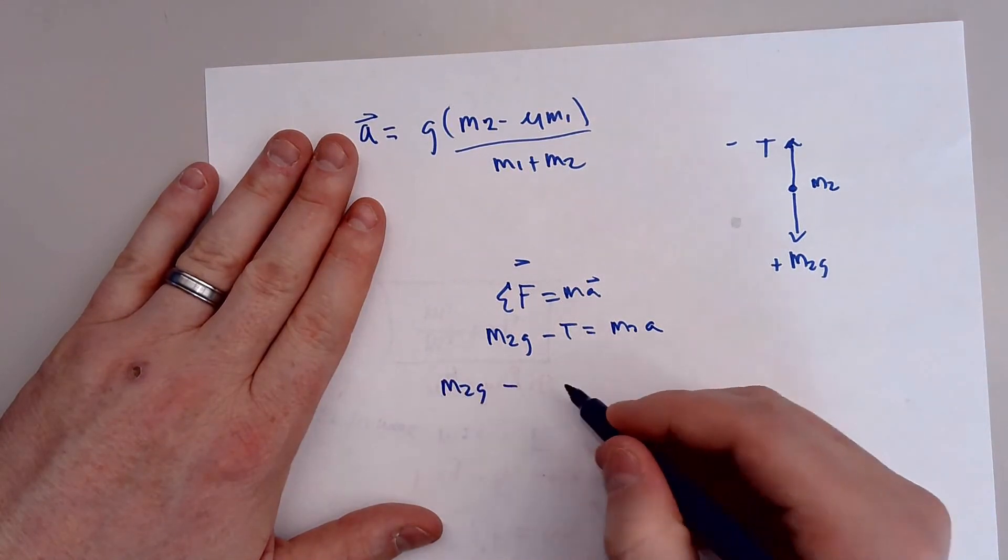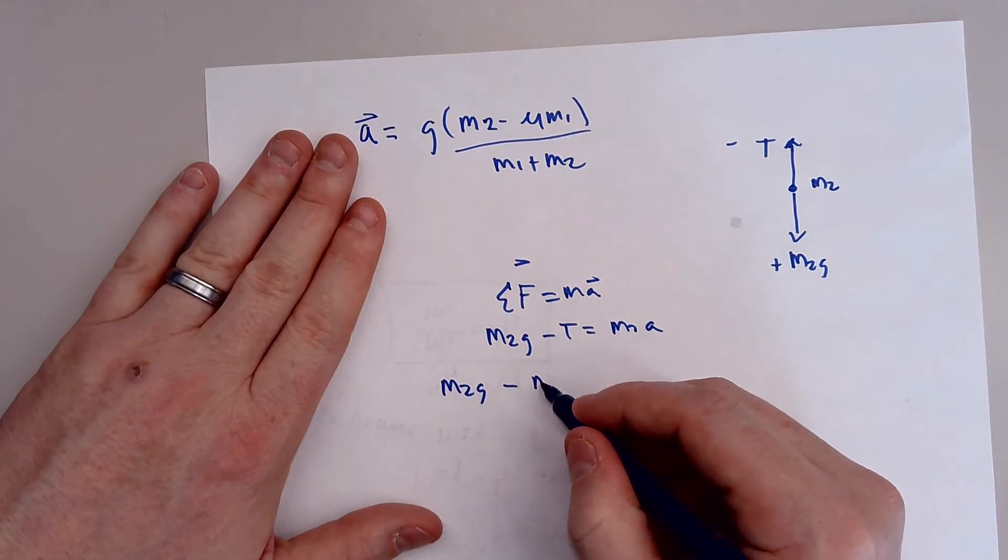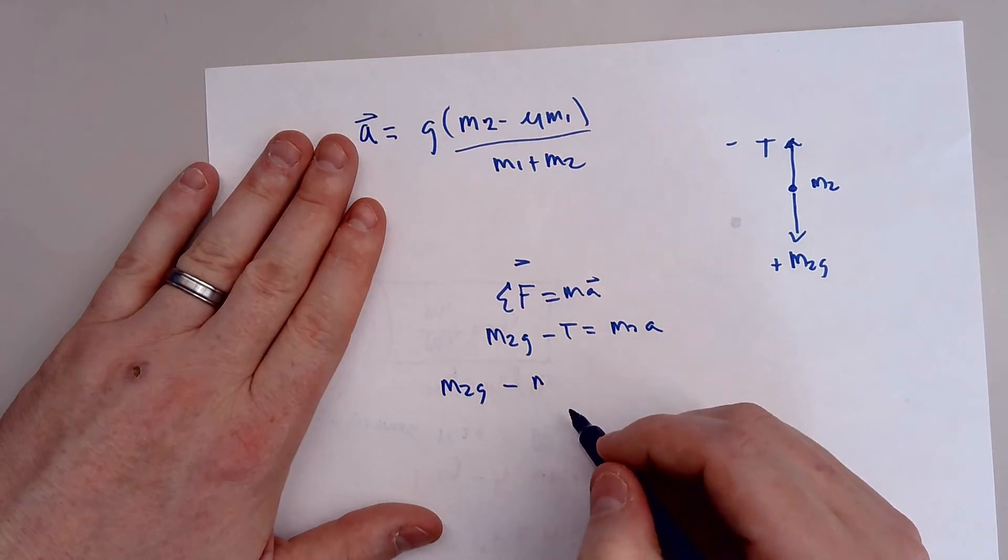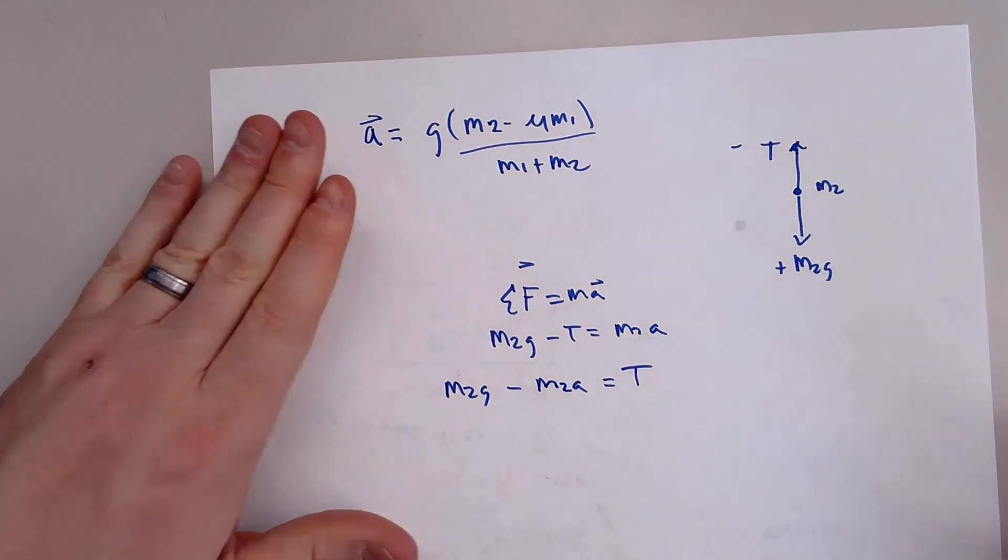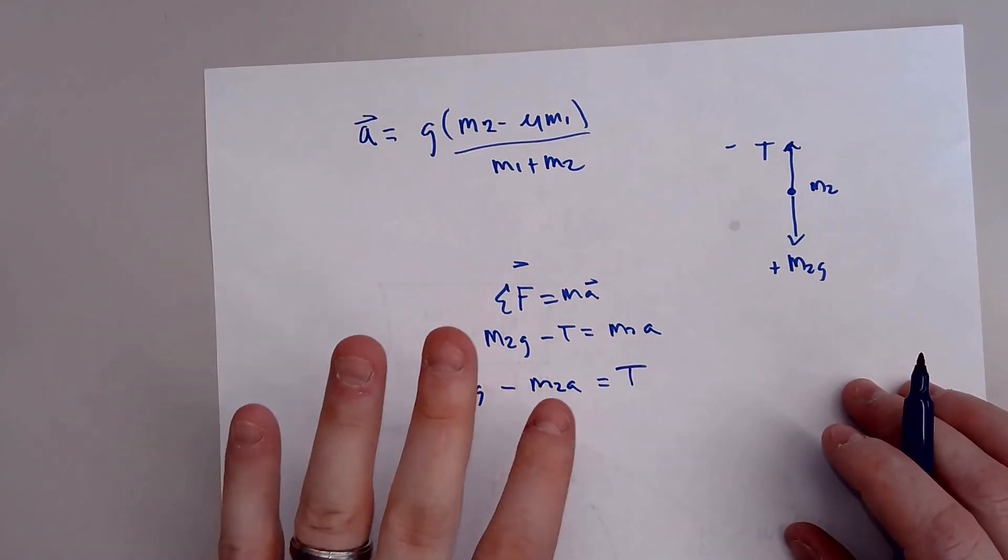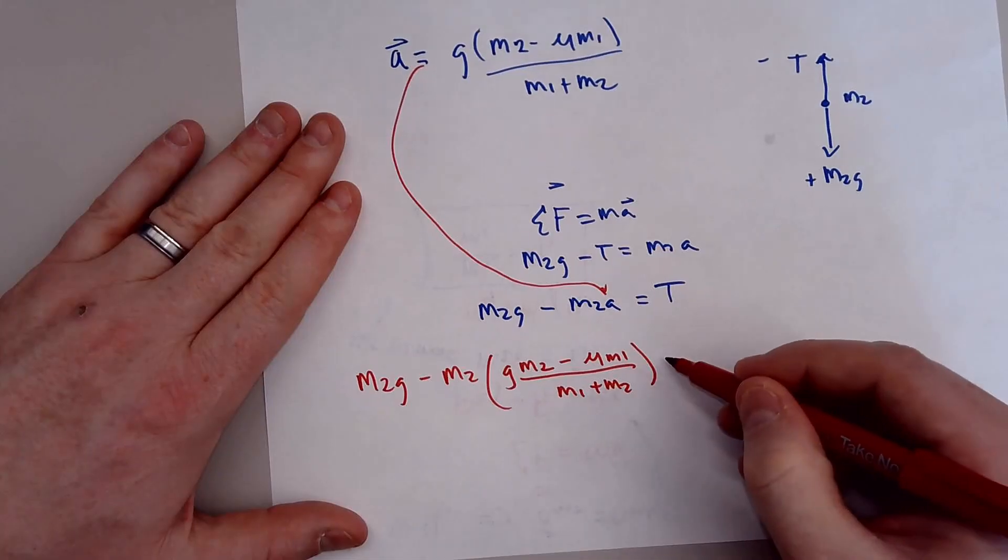So Newton's second law minus tension equals M2 times A. So we're going to solve for T. So it will be M2 times G minus, oh, sorry, M2 times A equals T. So now we're going to take this and we're going to shove it in right there on that acceleration. So all this jazz comes over right there. And we get this M2 times gravity minus M2 times G M2 minus mu M1 all over M1 plus M2 equals T.